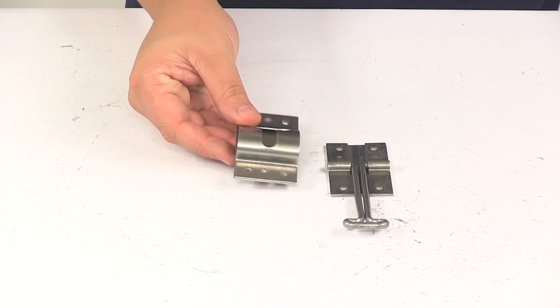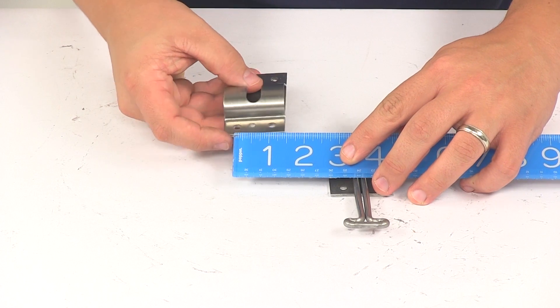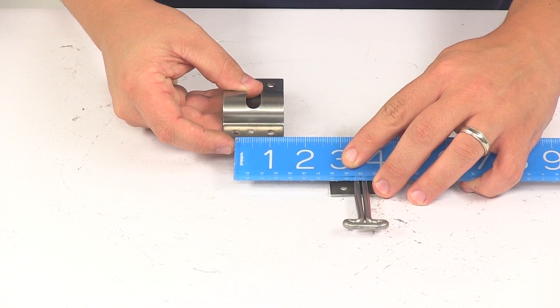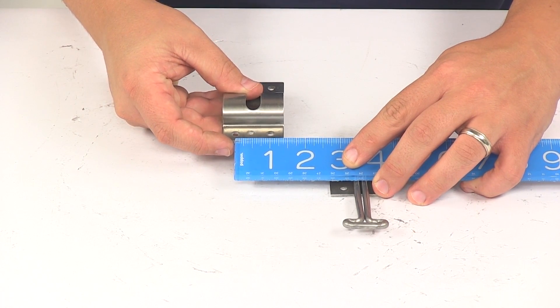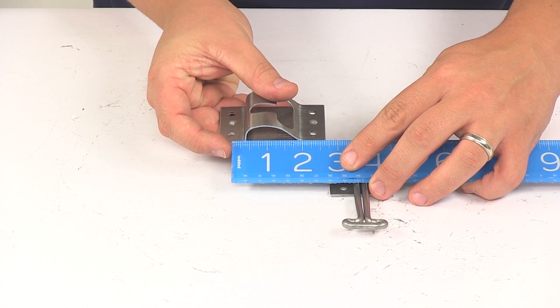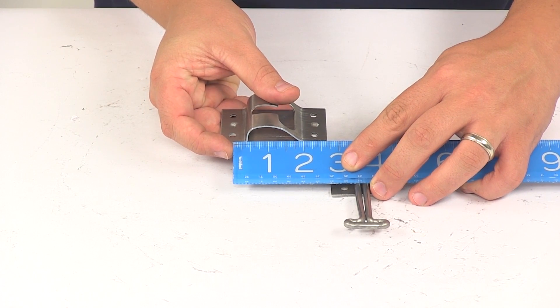The mount hole spacing is going to be the same for each piece because that back plate measures the same. Center on center is about one inch separation. Going this direction, center on center is about two and five-sixteenths of an inch.